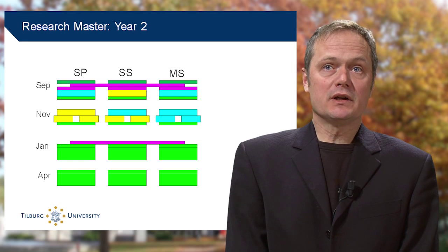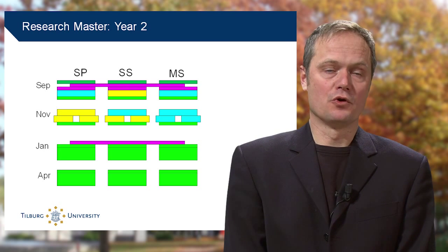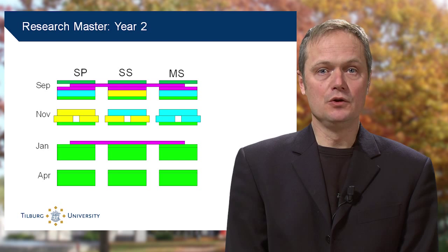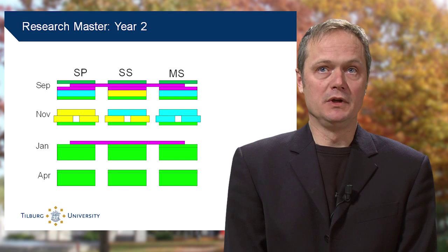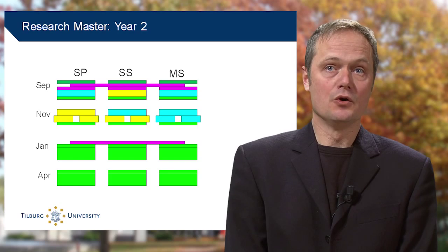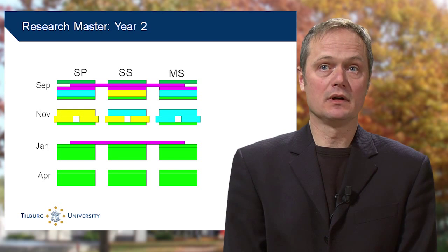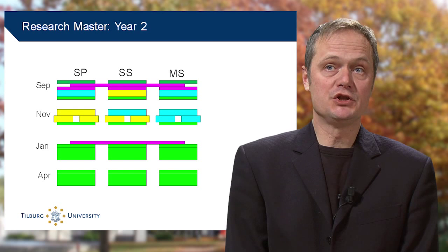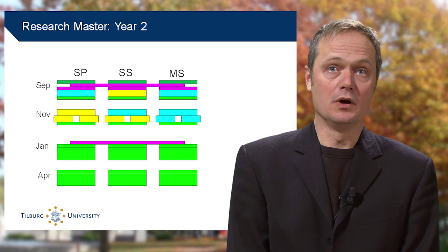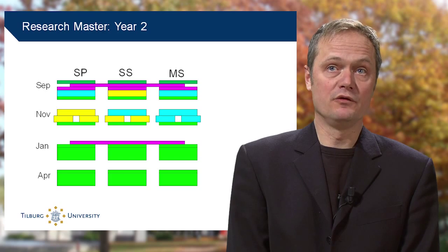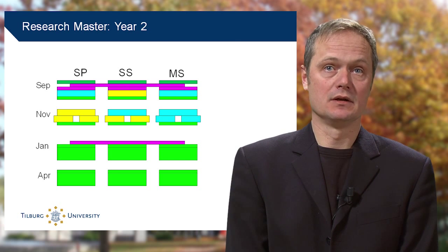Starting from the final level of a bachelor's program, the research master's program will train you step-by-step to become a full scientific researcher, ready to work or to start a PhD program. For more information, please check our website, which has a graphic display of the curriculum that is more informative and has some links.